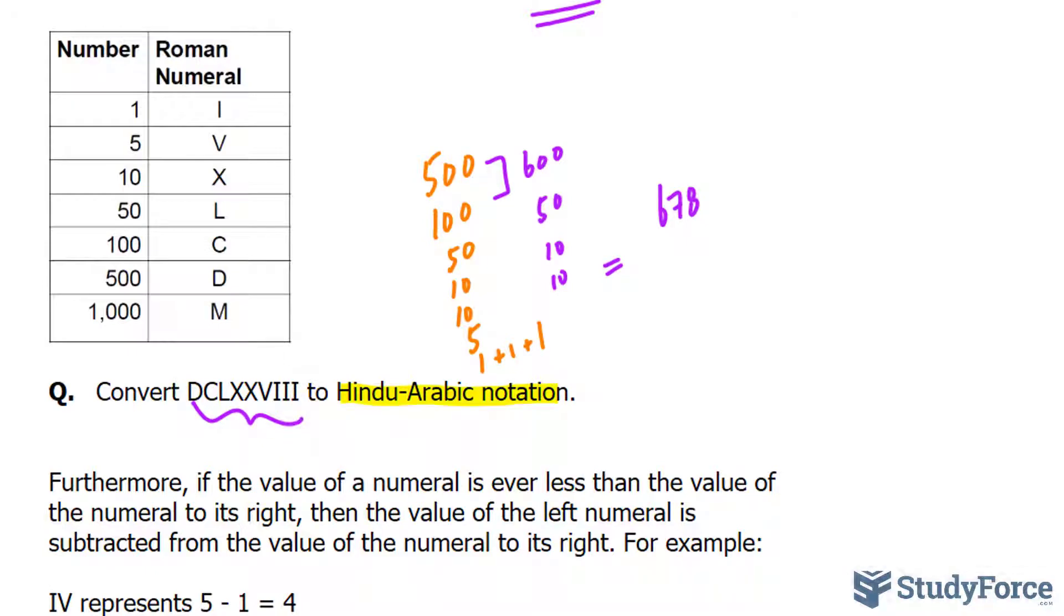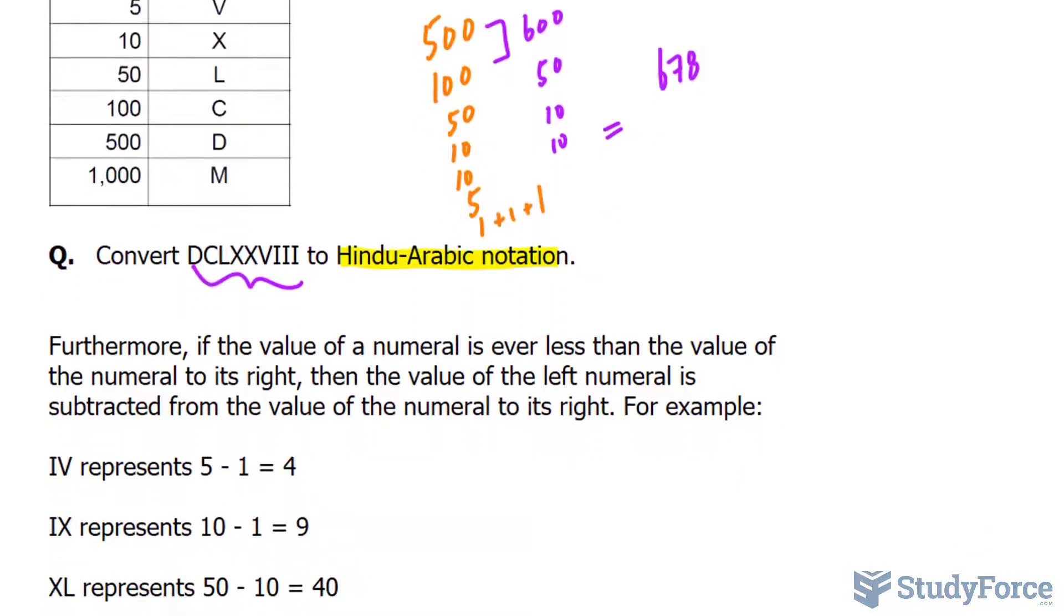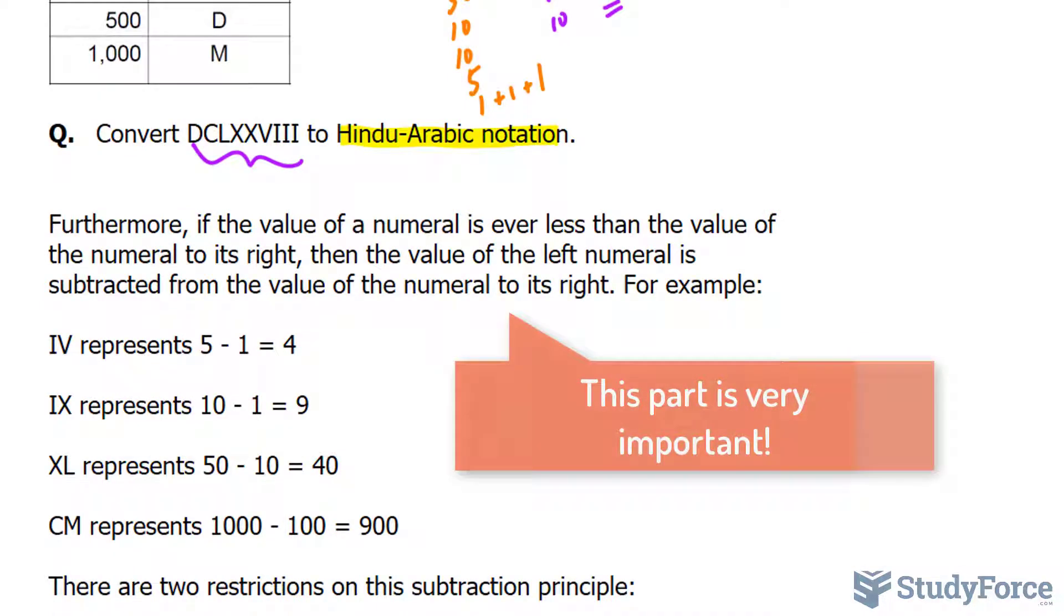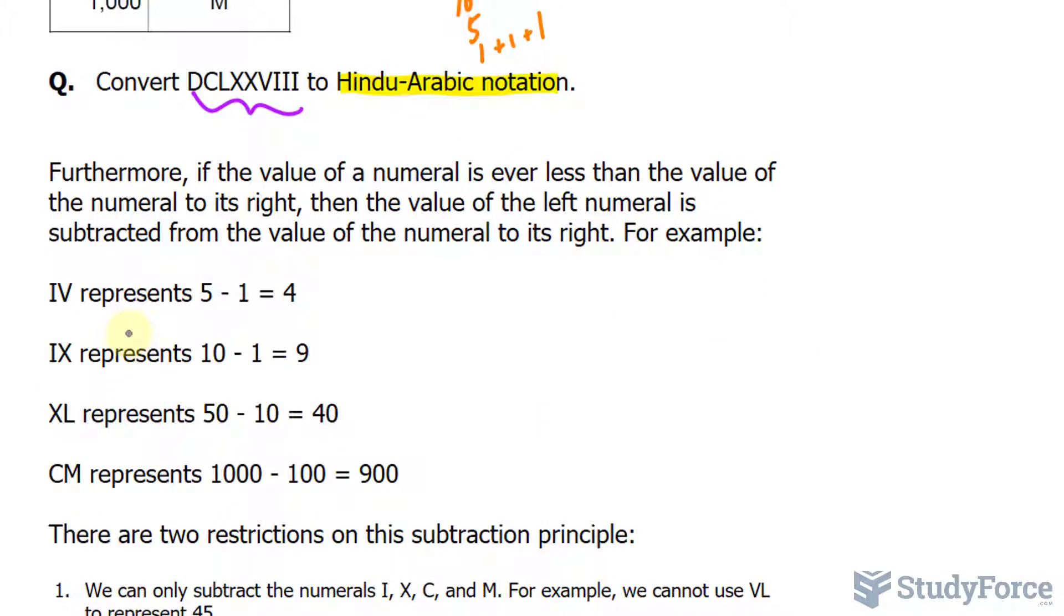Furthermore, if the value of a numeral is ever less than the value of the numeral to its right, then the value of the left numeral is subtracted from the value of the numeral to its right. For example,